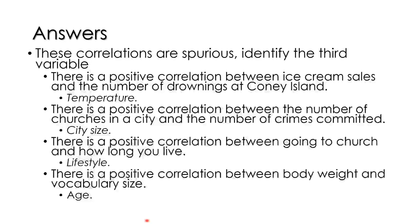The third variable for the Coney Island example is temperature. There's no direct correlation between the number of drownings and the number of ice cream sales — it's a spurious relationship. As the temperature rises, more people buy ice cream because it's hot and they want something cool. Also, as the temperature rises, more people are swimming and therefore more people are drowning. Temperature is the third variable that causes the spurious relationship between ice cream sales and drownings.